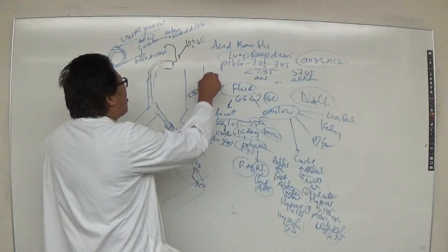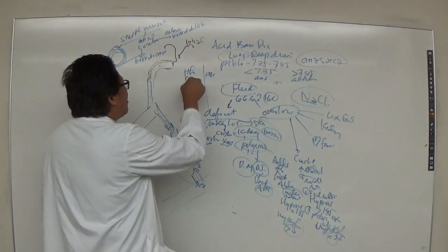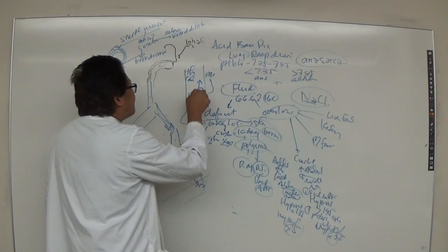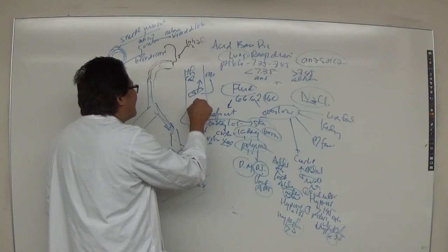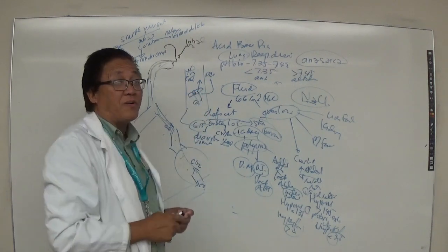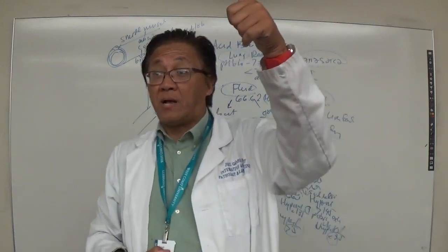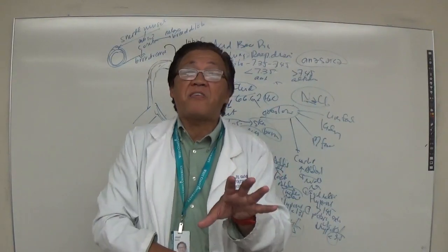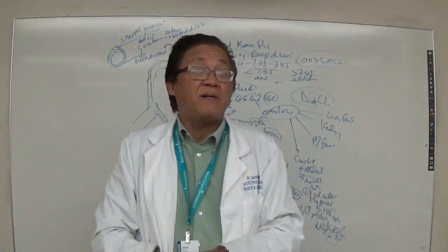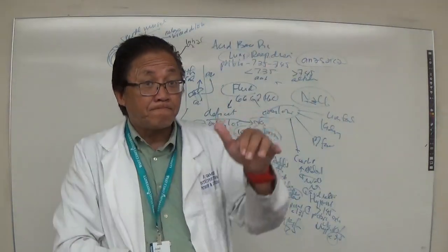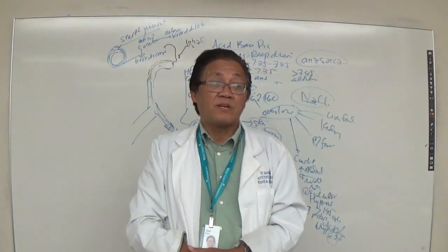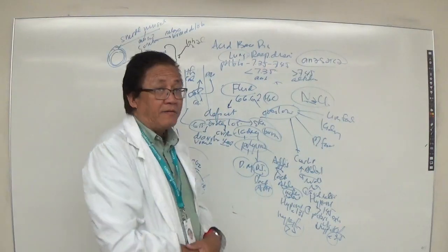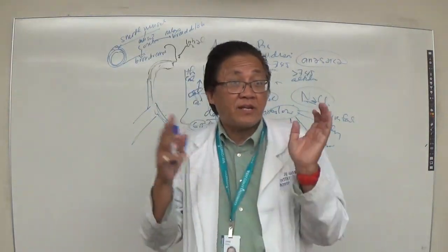Parathyroid hormone (PTH) does the opposite of calcitonin — it moves calcium from the bone into the blood, raising blood calcium levels. Hyperparathyroidism causes hypercalcemia; hypoparathyroidism causes hypocalcemia. Always remember these relationships. After a short break of five minutes, we'll have the exam.